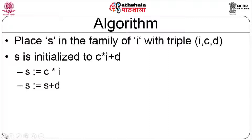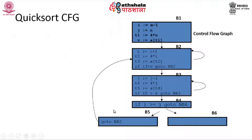Using the quicksort algorithm as an optimization example, blocks b2 and b3 are classic examples of induction variable elimination and strength reduction. In b2, i is an induction variable, and t2 is a derived induction variable based on 4*i. In b3, j is an induction variable, and t4 is a derived induction variable based on 4*j. The goal is to eliminate these derived induction variables.